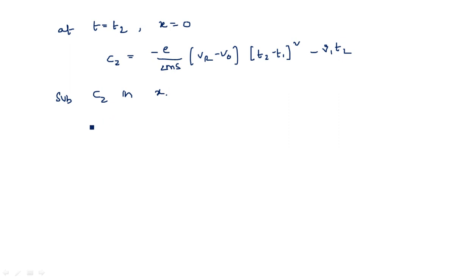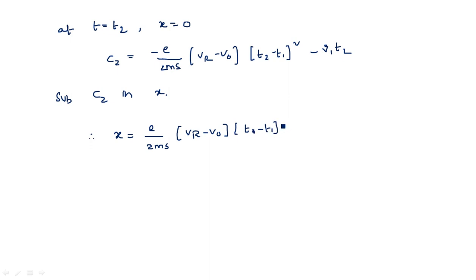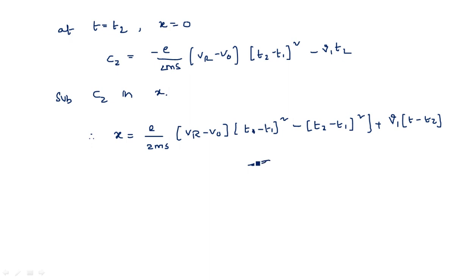Substituting C2 into the expression for x, the final expression for the distance traveled by the electron in the repeller space is: x equals (e/2ms)(Vr minus V0) times [(t minus t1)² minus (t2 minus t1)²] plus v1 times (t minus t2). This is the distance traveled by the electron in the repeller space. In the next video I will explain how to determine the output power. Thank you.